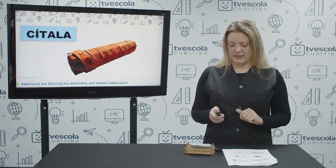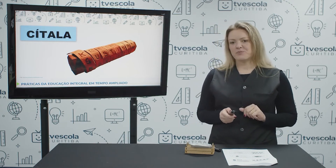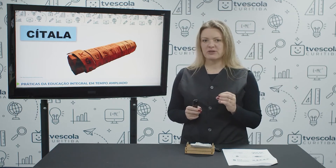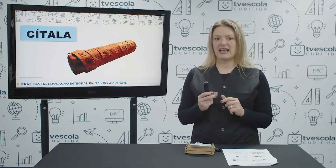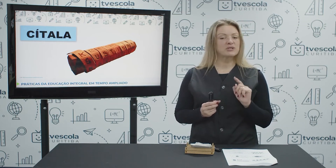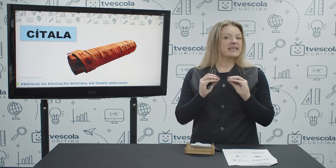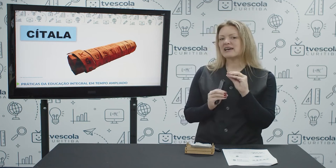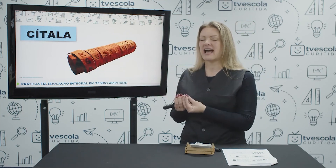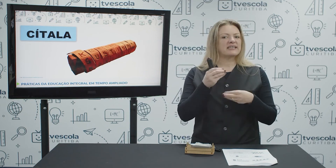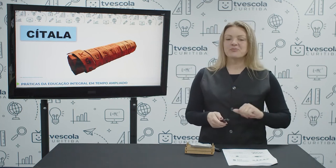Vocês sabiam que os cofres e os bancos usam criptografia? Quando vemos os adultos trocando mensagens pelo telefone celular, essas mensagens são protegidas por criptografia. No momento em que a mensagem é enviada, é gerado um algoritmo que transforma a mensagem numa mensagem secreta, e só o celular do destinatário conseguirá converter a mensagem e voltar para o seu formato original.